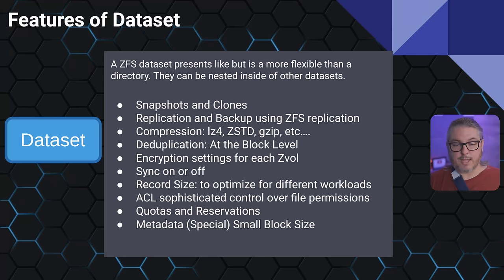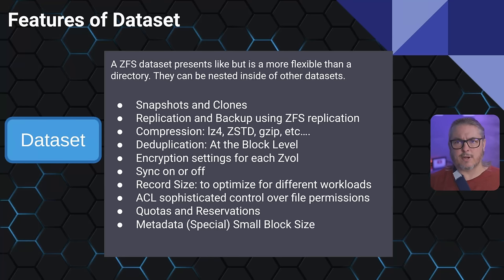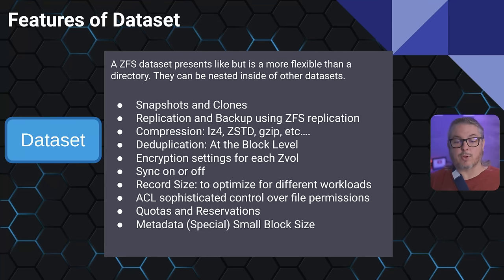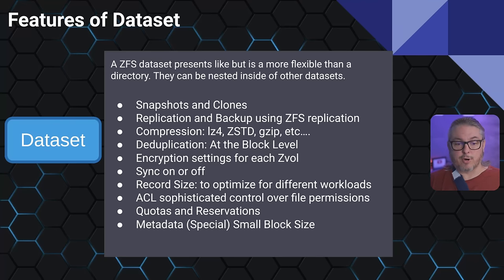Datasets also support replication and backup via ZFS replication, again tied to your data retention policies and backup frequency. Compression is set on a per-dataset basis. Deduplication at the block level is still done per dataset — there are advantages to enabling it only on certain datasets, not all of them. Encryption settings can differ per dataset: you may not want all datasets encrypted requiring a password at boot, but you might want one particular dataset to require a password after startup. Different keys can auto-unlock and be nested for different security policies based on where you're replicating data. Sync on or off and record size limits are also per-dataset options, along with ACL for sophisticated control over file permissions.